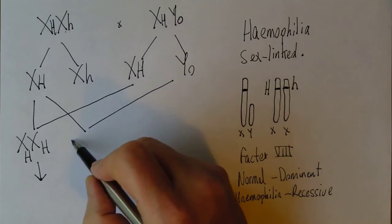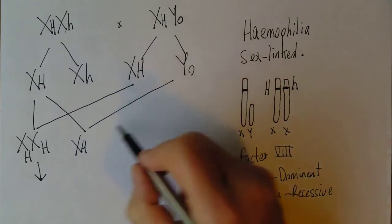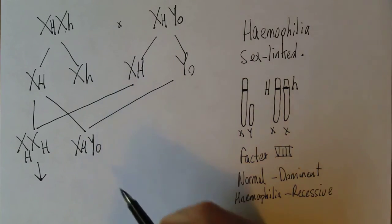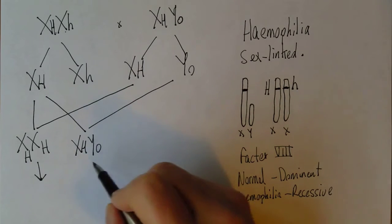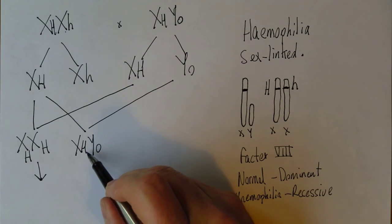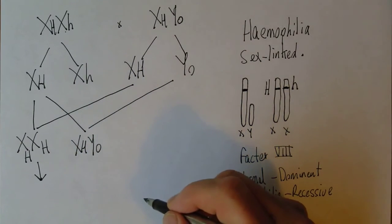Another possibility is X(H) combining with Y(0), giving us a boy who does not suffer from haemophilia because he has one copy of the normal dominant gene. This is what most men are, which is good.